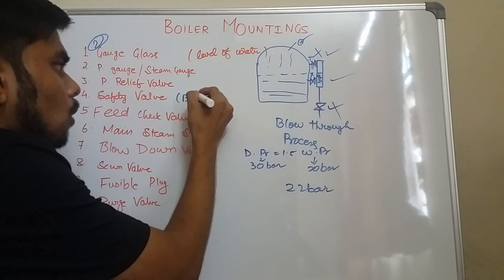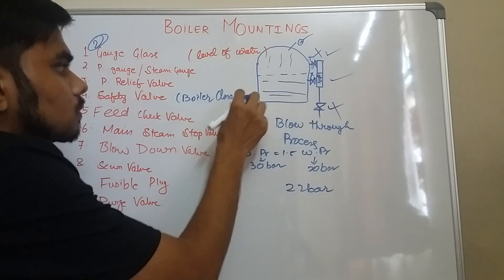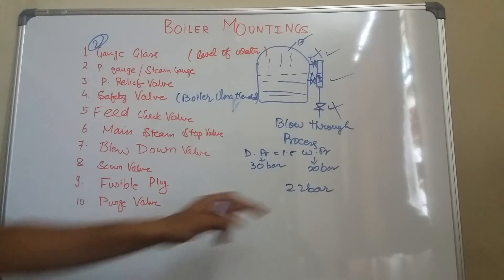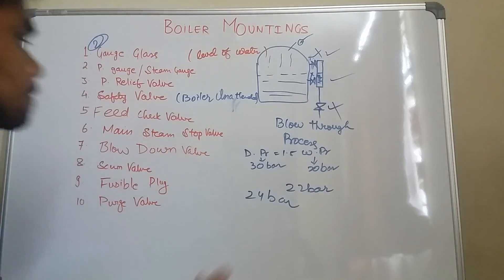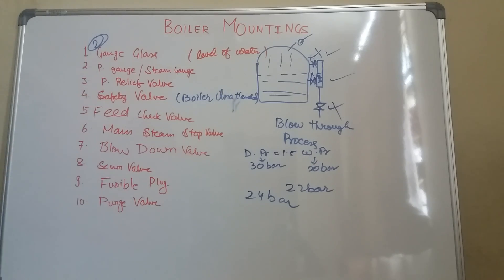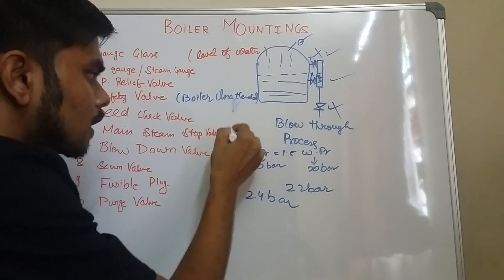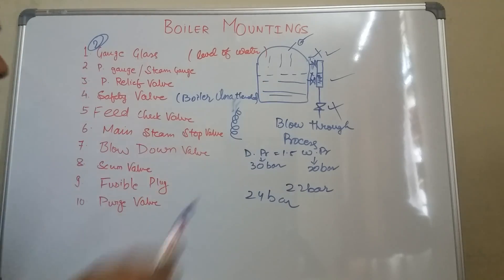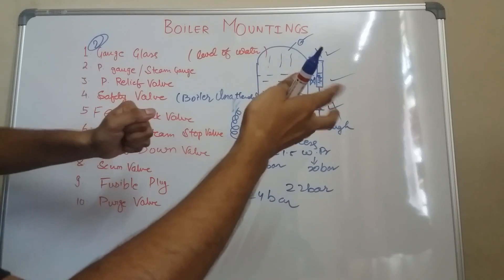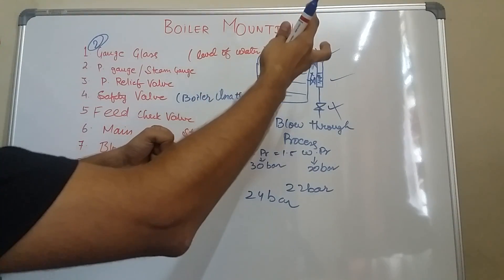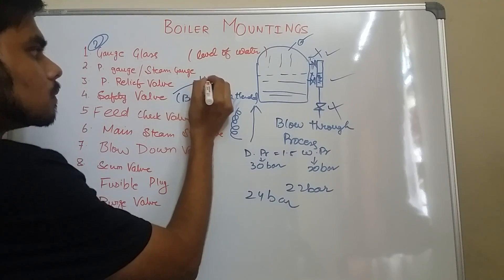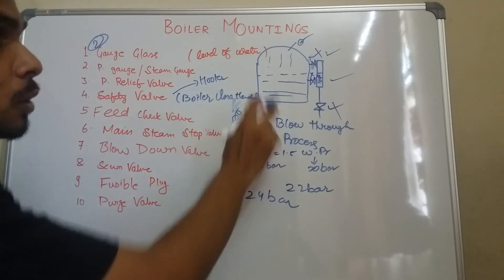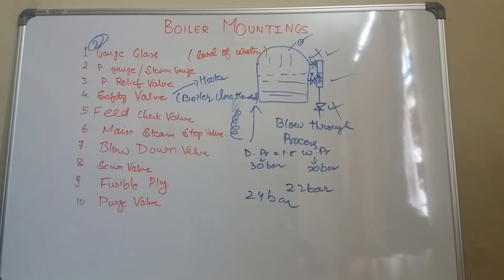The safety valve is another kind of pressure relief valve but it operates when the boiler is unattended. If the boiler is unattended and pressure goes on increasing — suppose it comes to 25 bar — this spring-loaded safety valve will stretch out due to the steam pressure, releasing the excess steam. This safety valve is connected to a hooter so it will produce a siren, alerting the boiler operator that the pressure has increased.